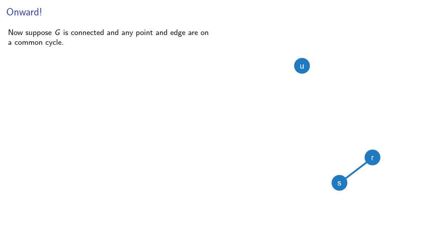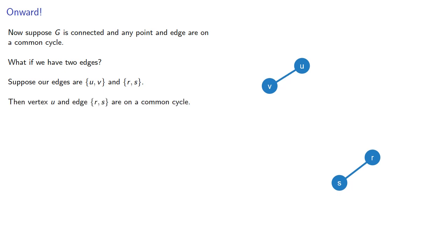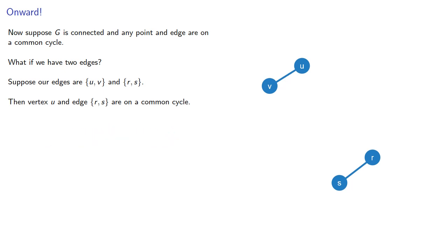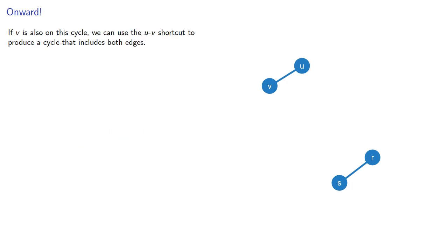To continue our chain, let's suppose g is connected and any point and edge are on a common cycle. What if we have two edges? Suppose our edges are those between vertices u and v and that between vertices r and s. Then vertex u and the edge rs are on a common cycle. If v is also on this cycle, we can use the uv shortcut to produce a cycle that includes both edges.